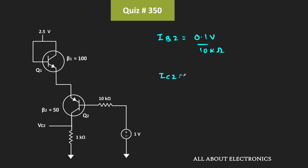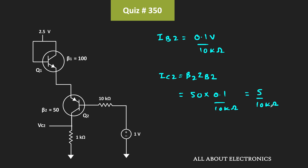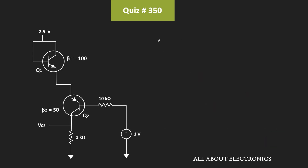And this current IC2 is equal to β2 times IB2. Here β2 is equal to 50. Therefore, IC2 is equal to 50 times 0.1V divided by 10kΩ, or that is equal to 5 divided by 10kΩ. And the voltage VC2 is equal to IC2 times 1kΩ, that is equal to 5 divided by 10kΩ times 1kΩ, or VC2 is equal to 0.5V.